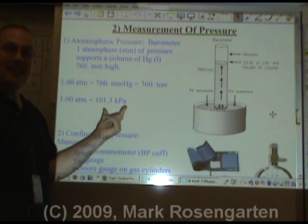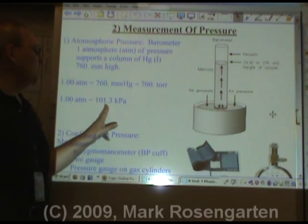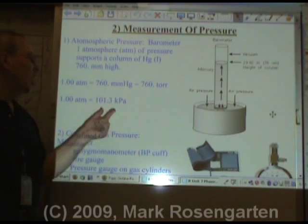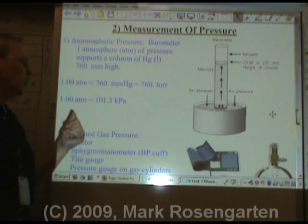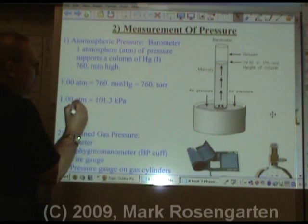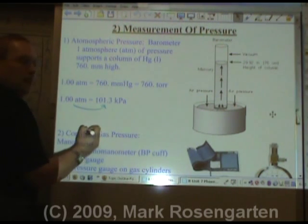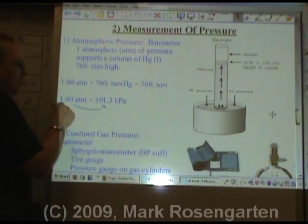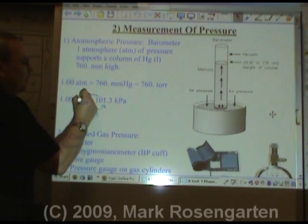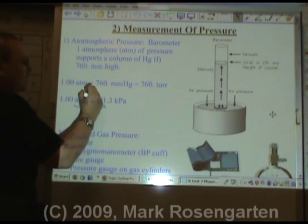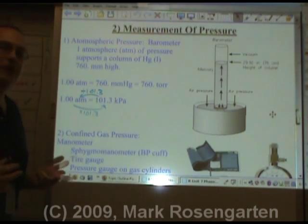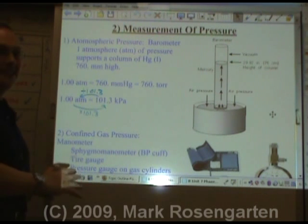We're going to be using atmospheres and kilopascals in this class. 101.3 kilopascals is a metric unit of pressure equal to 1.00 atmosphere, so it's very convenient to convert back and forth. To go from atmospheres to kilopascals, multiply by 101.3; to go from kilopascals to atmospheres, divide by 101.3. You'll need to convert back and forth when we do some math with gases — we call it gas math.